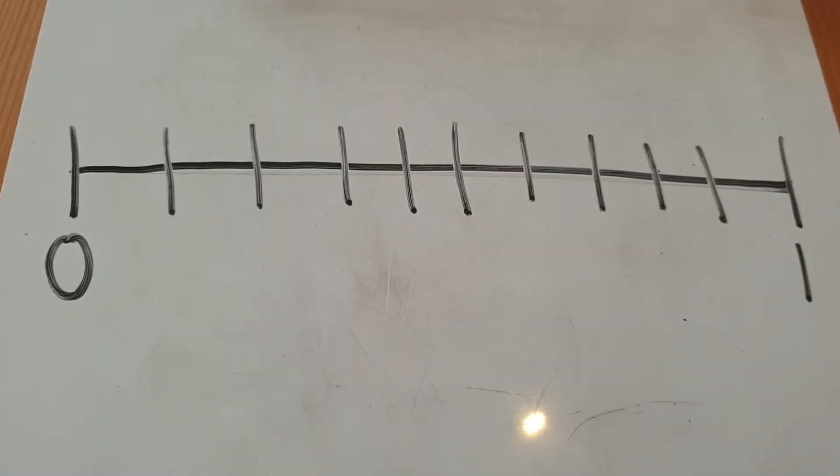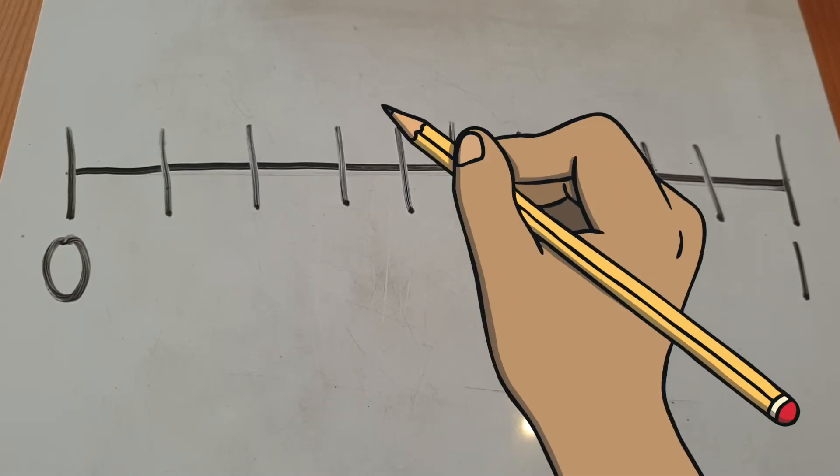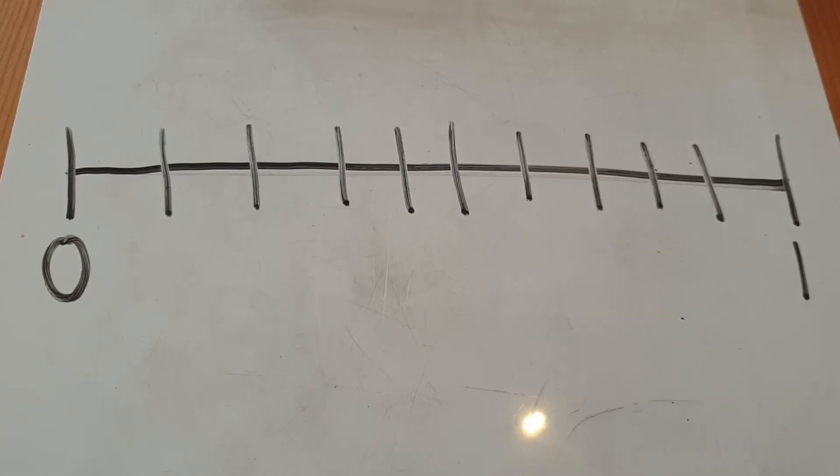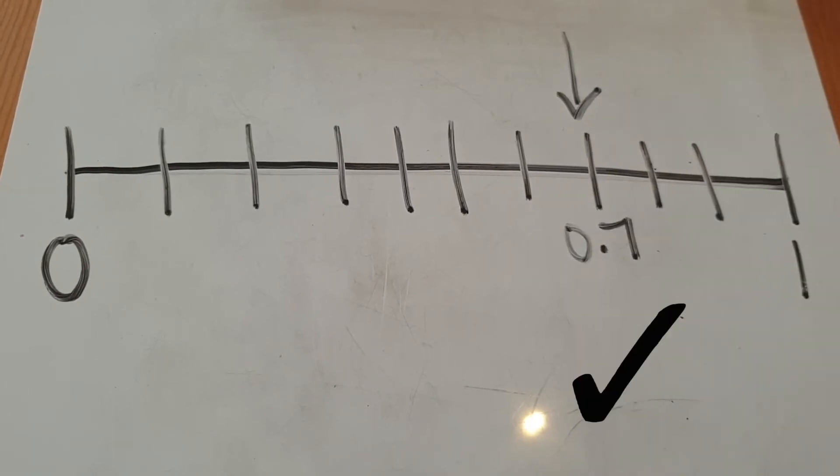To take this a step further, we could find missing decimals. For example, you could give this blank number line and ask your child to draw an arrow to where they think 0.7 would be. Where would 0.2 be?